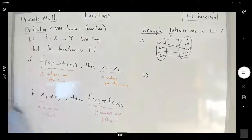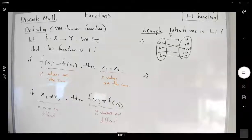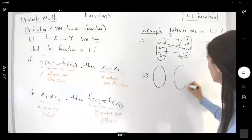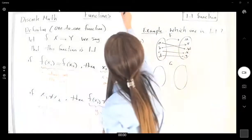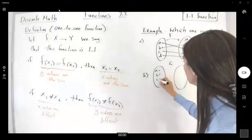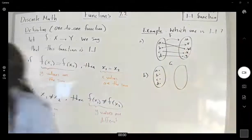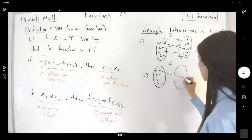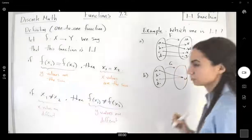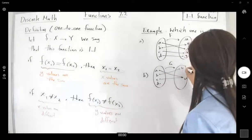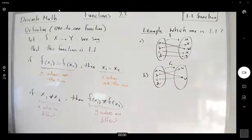Function B defines a function G, which behaves like this. You have A, B, C, and D. Function G maps A to W and also C to W as well. Then B maps to U, and D maps to Y.